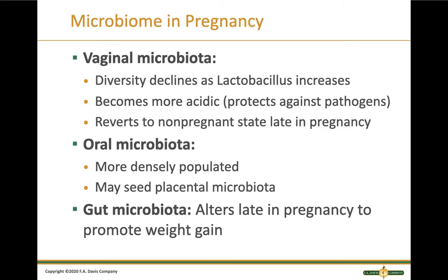The microbiome changes during pregnancy. The vaginal microbiota shifts: diversity declines, lactobacillus increases — which babies need to help digest milk — and the environment becomes more acidic to protect against pathogens. Late in pregnancy it returns toward the non-pregnant state. The oral microbiota becomes more densely populated, and there's a link between oral infections and pregnancy complications. The gut microbiota changes late in pregnancy to promote weight gain, providing the mother with enough energy reserves for the baby.